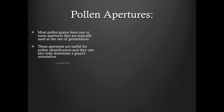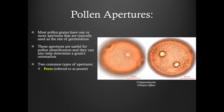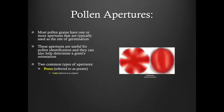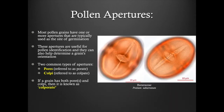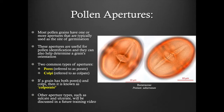There are two common types of apertures we will discuss today. Pores are apertures that are generally circular or elliptical in shape; their morphology will be referred to as porate. Colpi are elongated apertures; their morphology will be referred to as colpate. If both types of apertures are present on a grain, then the morphology is considered to be colporate. We will discuss other aperture types such as sulcate and ulcerate in a future training video.